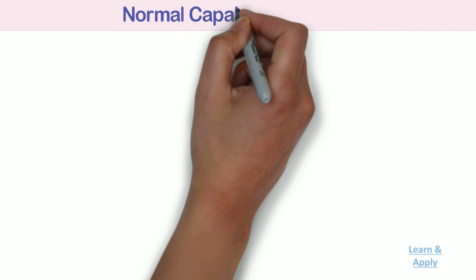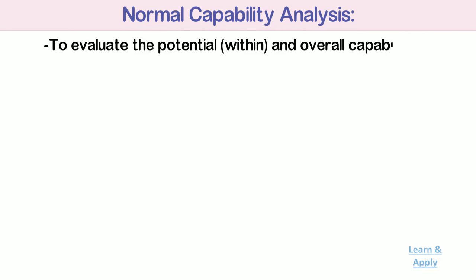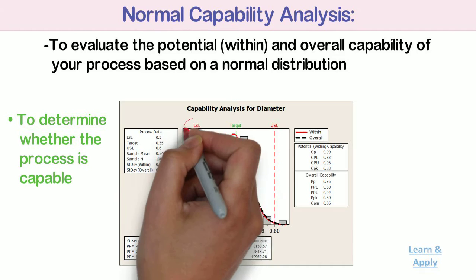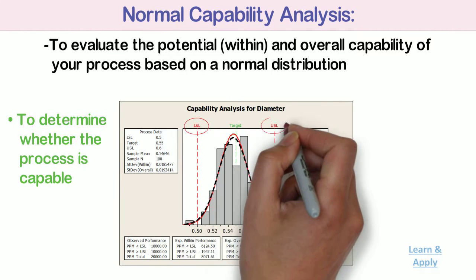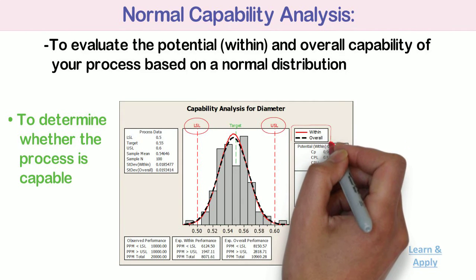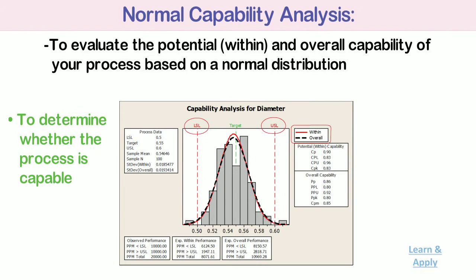Normal capability analysis is used to evaluate the potential, that is, within, and overall capability of your process based on a normal distribution. Using this analysis, you can determine whether the process is capable of producing output that meets customer requirements, and compare the overall capability of the process with its potential, that is, within capability, to assess opportunity for improvement.